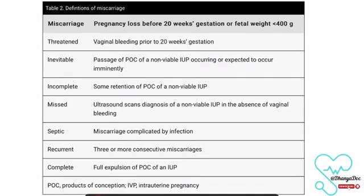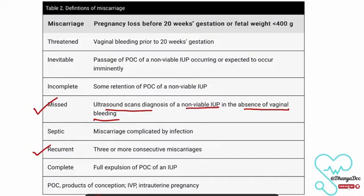This table also shows the different types of miscarriages already discussed. Missed abortion is usually an ultrasound diagnosis of non-viable intrauterine pregnancy in the absence of vaginal bleeding. Regarding recurrent miscarriages: if there are more than three successive miscarriages, it is called recurrent miscarriage. I hope now you have an idea about miscarriages.